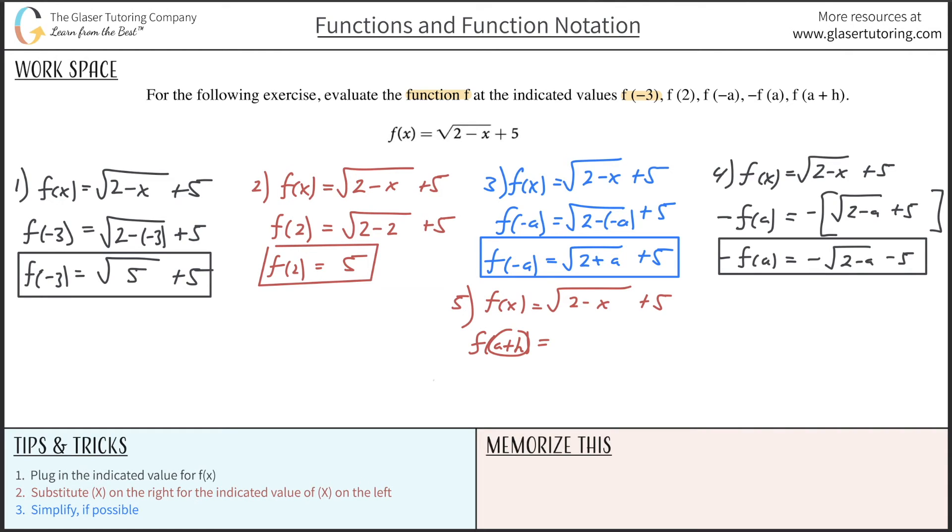This thing is now just a plus h. But who cares if it's 3, 4, 10 million, a plus h? It doesn't matter. The process is the same. Wherever I see x on the right-hand side, I'm now going to substitute this thing in for it. So it just becomes now radical 2 minus parentheses.